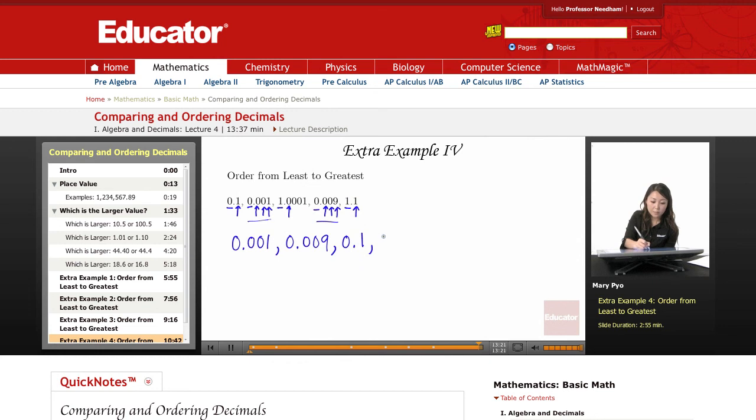So this is going to go next, 1.0001. And then your largest number, the greatest value, is going to be 1.1.